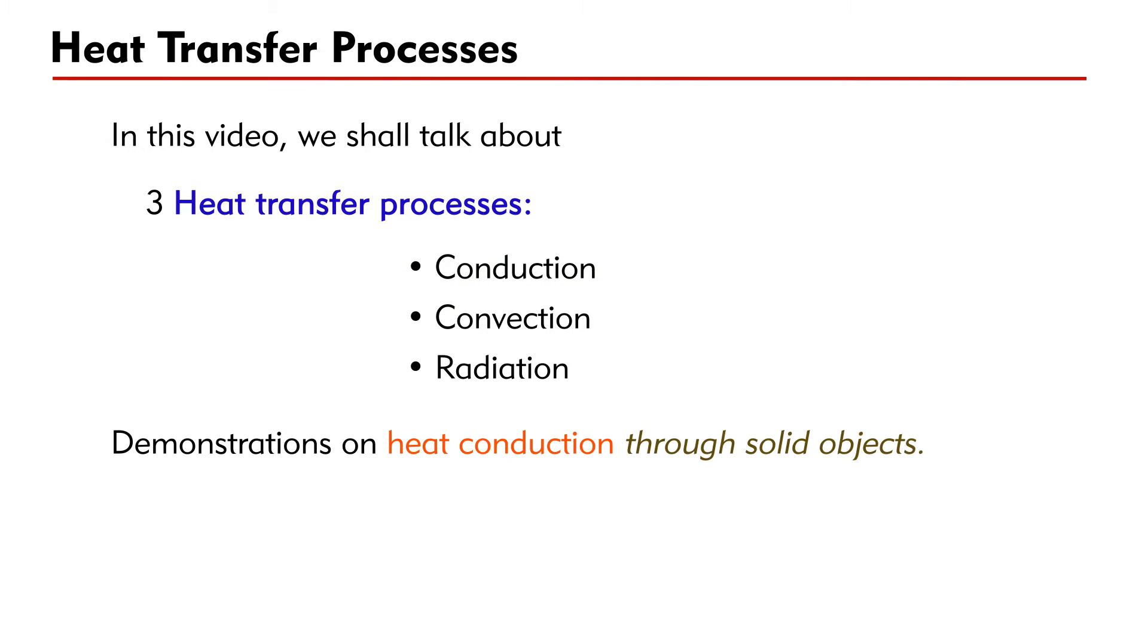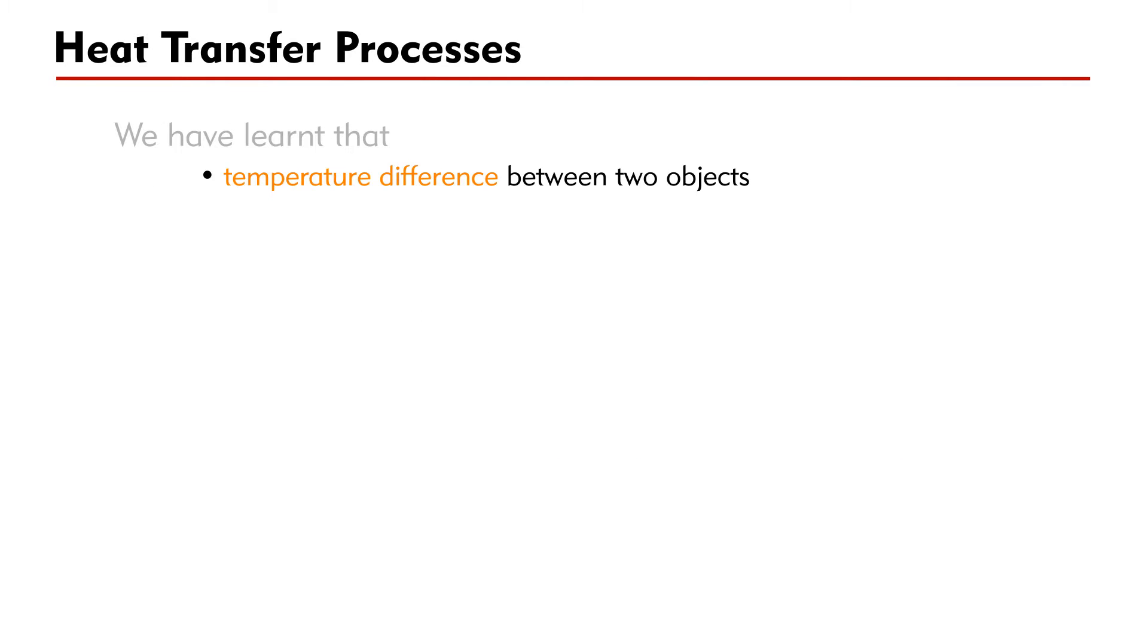The other two processes are convection and radiation. You will see several demonstrations on heat conduction through solid objects. We have learned that when there is a temperature difference between two objects, heat will flow from the hot one to the cold one. We are going to learn how the heat flow or heat transfer takes place.